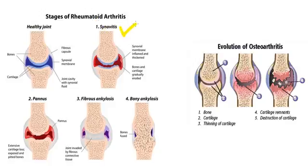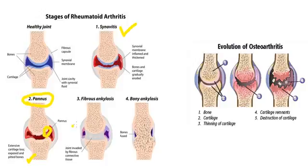The stages of rheumatoid arthritis are: first, synovitis — inflammation of the synovium with the synovial membrane becoming inflamed and thickened; then bone and cartilage are gradually eroded with pannus formation (high yield). Next, extensive cartilage loss with exposed and pitted bone. Then fibrous ankylosis, where the joint is invaded by fibrous connective tissue. Finally, bony ankylosis, where the bones become fused.